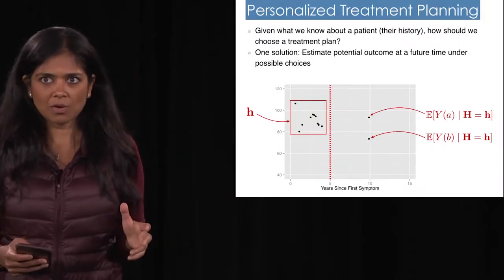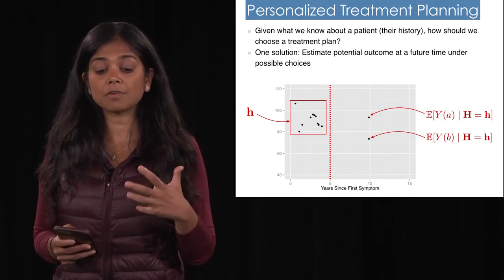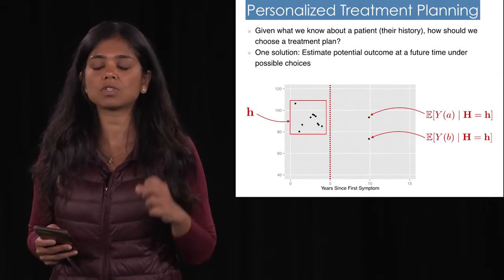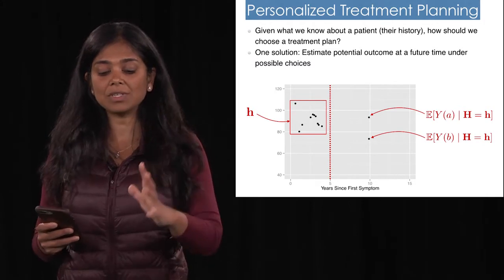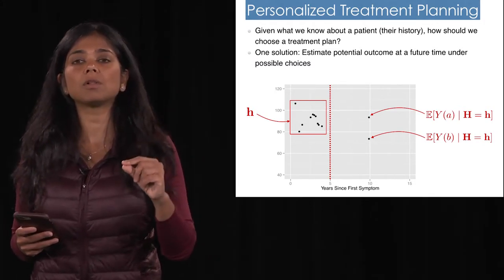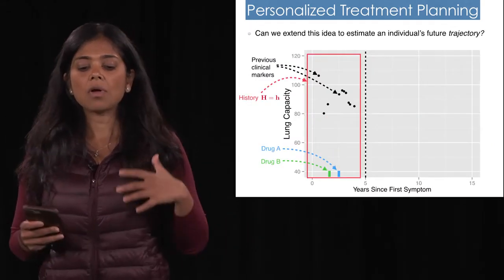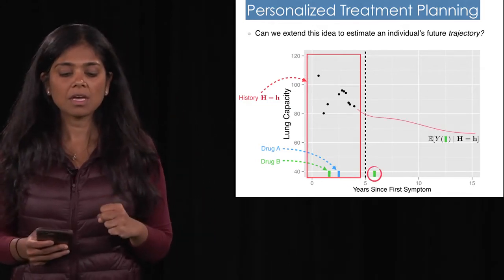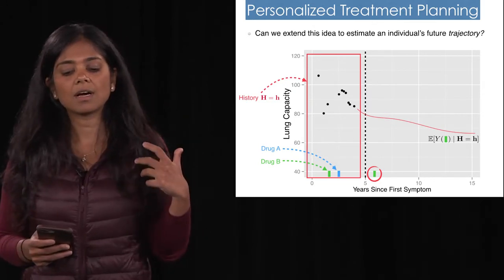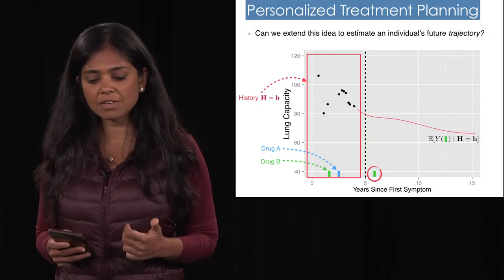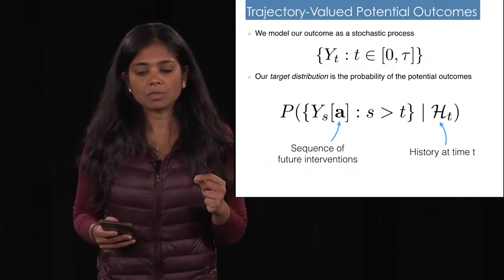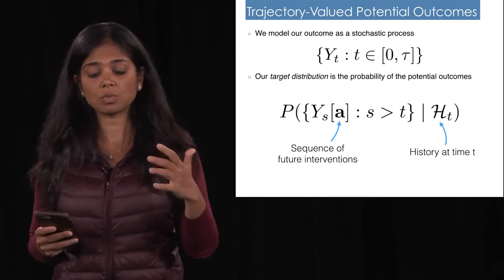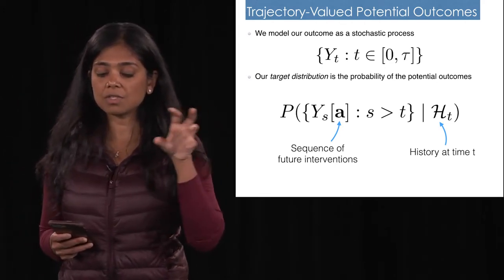Hussain talked about the potential outcome framework; we come back to our problem of figuring out for this individual what is the right thing to do — what is the trajectory going to look like under option A versus option B. Instead of just modeling the random variable at a specific point in time, we're going to think about trajectories: for example, what is this person's lung trajectory going to be under different treatment interventions given their history? We're modeling y(t) where t is over an interval — the distribution over functions — what is the distribution over functions under treatment A versus B, or a sequence of interventions in the future?